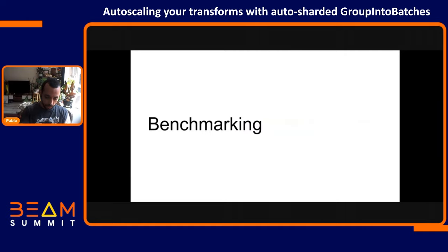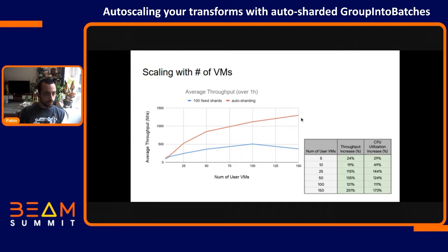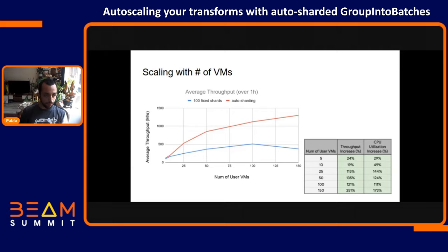For benchmarking, when trying this new behavior, we were able to see that it scales with the number of VMs. The average throughput — the more data and more VMs we have — scaled with the number of VMs, whereas the fixed number of shards, which is 100 fixed shards, had a maximum of 100 VMs that would be able to work with it properly, after which performance would go down. For a user whose pipeline data volume can vary, it's a lot of trouble to find a fixed parameter that works for most use cases. Auto sharding behaved really great in this case.